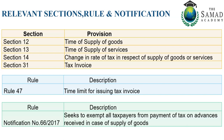There are different sections. As working professionals, we need to understand tax section-wise. Section 12 indicates time of supply of goods, Section 13 is time of supply of services, and Section 14 talks about change in rate of taxes in respect of supply of goods and services.